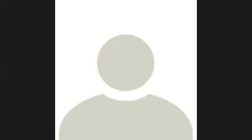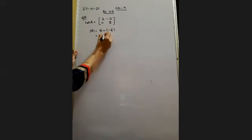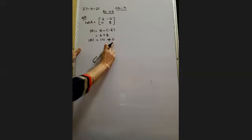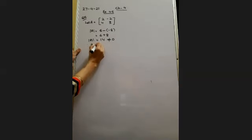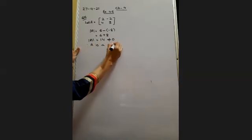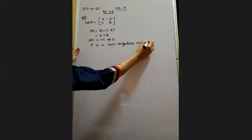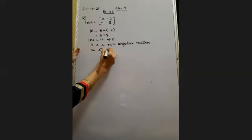So, 3 twos are 6. Then 4 into minus 2 is minus 8. This is 6 plus 8, that is 14. Your determinant of A is 14. This is not equal to zero. Therefore, A is a non-singular matrix.